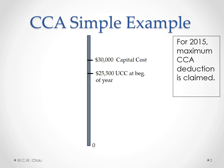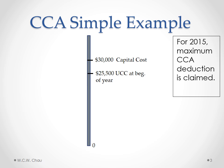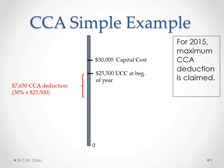Now we're in the year 2015. At the beginning of that year, our UCC balance is $25,500. Assuming Super Consulting will be claiming the maximum CCA deduction available for 2015, the CCA deduction for 2015 will be $7,650, which is the 30% rate multiplied by the UCC of $25,500. That brings our UCC down to $17,850, which is our UCC balance at the end of 2015.